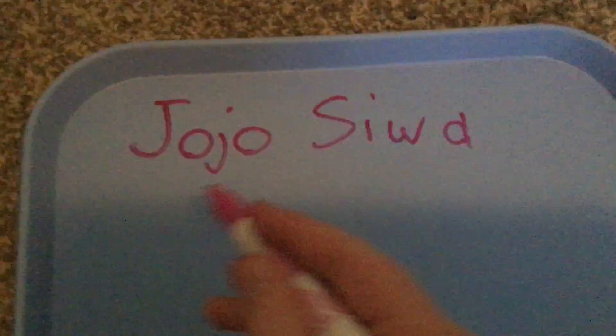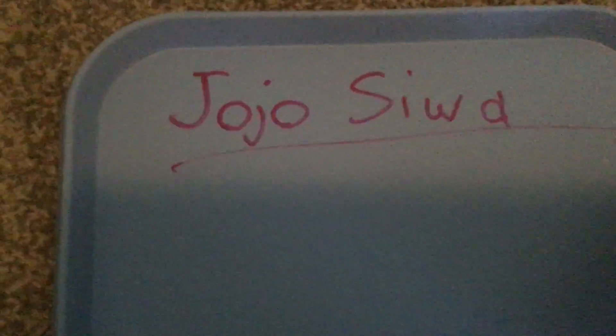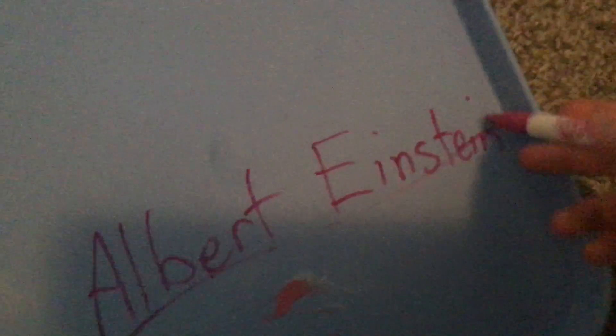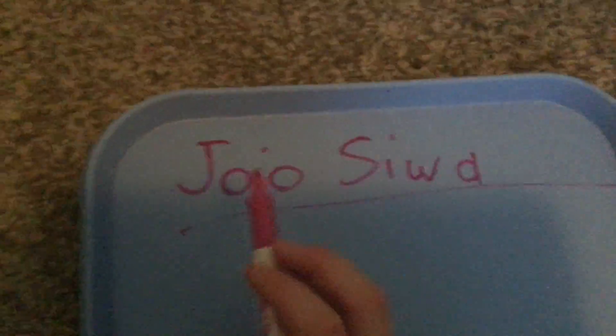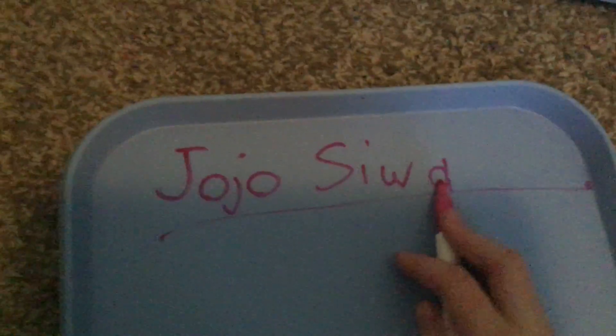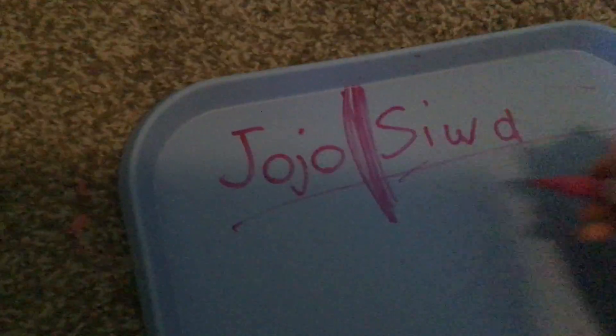This is proof that JoJo Siwa is all the way related to the one and only Albert Einstein. This is how. So, if you look at JoJo Siwa, we don't need Siwa right now, so we'll just put a big fat line here. JoJo — we have J-O-J-O.